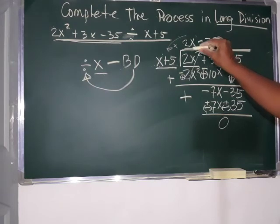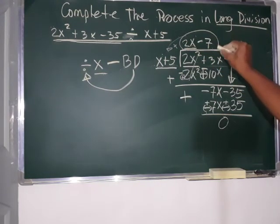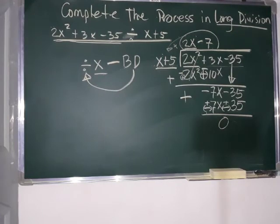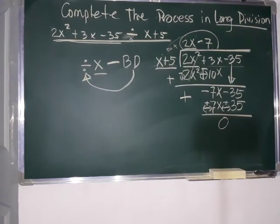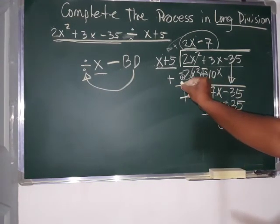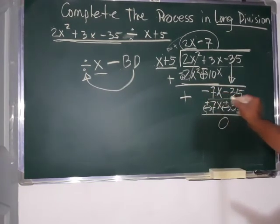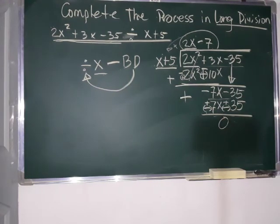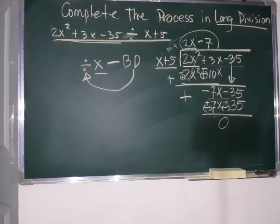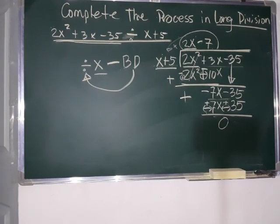Okay. So, the question that they ask is, give or supply the missing number. So, their missing number is this one. And, of course, this one and this one. Okay. So, this is how you do long division.